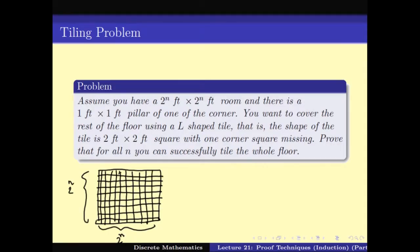There is a pillar at one of the corners — that corner is covered with the pillar so you cannot do anything with it. The room looks almost like a square except that one corner square foot is gone. You have an L-shaped tile — a 1×1×1 L-shaped tile. The question is: can you use this tile to cover the whole floor? You are not allowed to break the tile or leave any space uncovered. Prove that for all n you can successfully tile the whole floor.